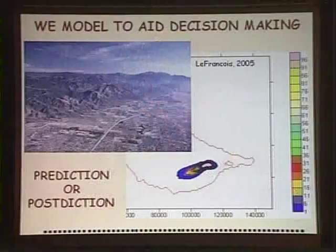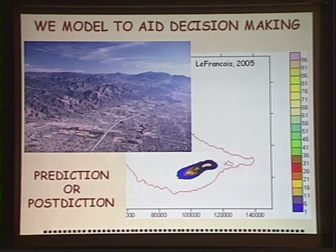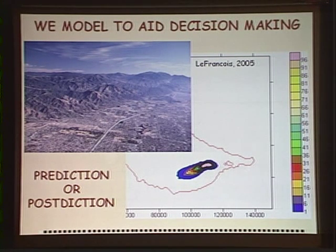So first, why we model. As academicians, we often model just to help us understand the system. But for most practical applications, we model because there's a decision to be made. And when we make a decision, we either need to predict something or post-dict something, as illustrated by this plume near Los Angeles that a student at Colorado School of Mines is working on.